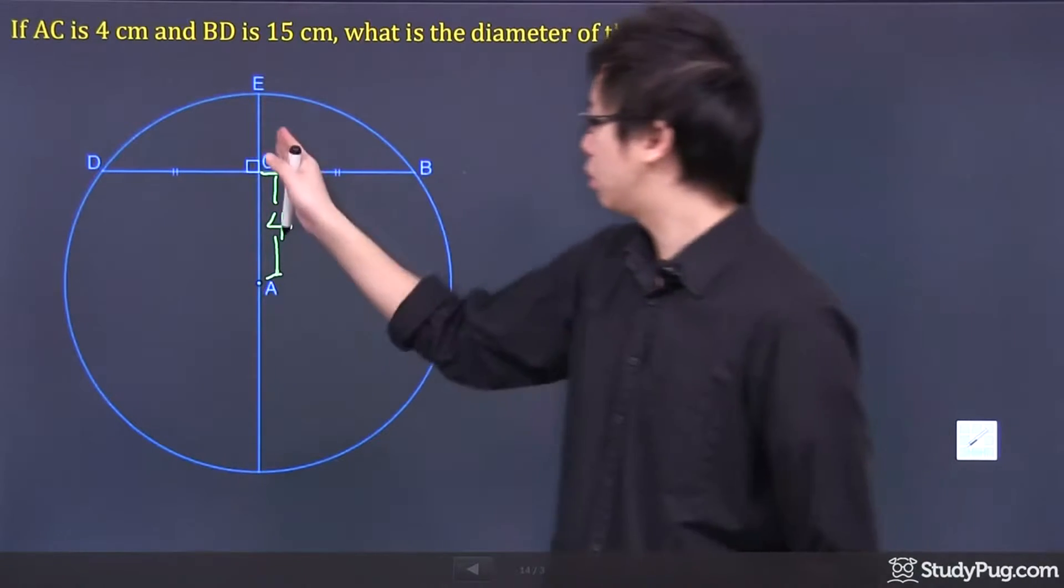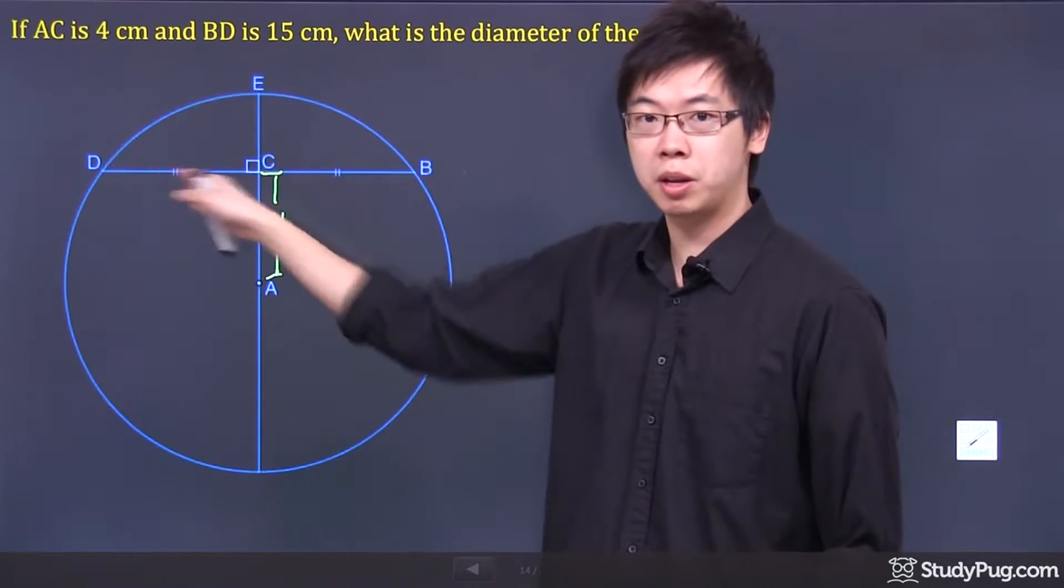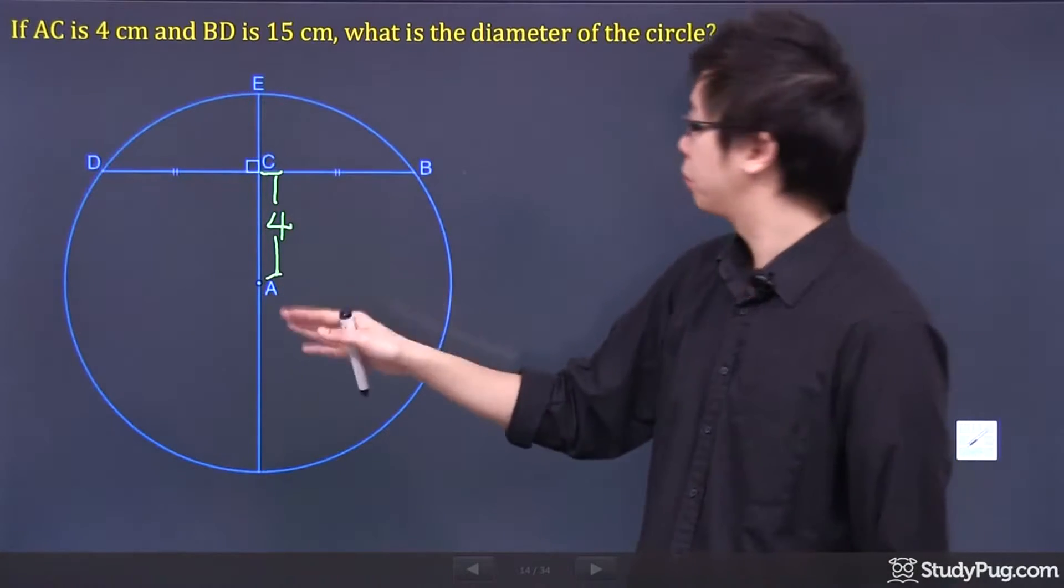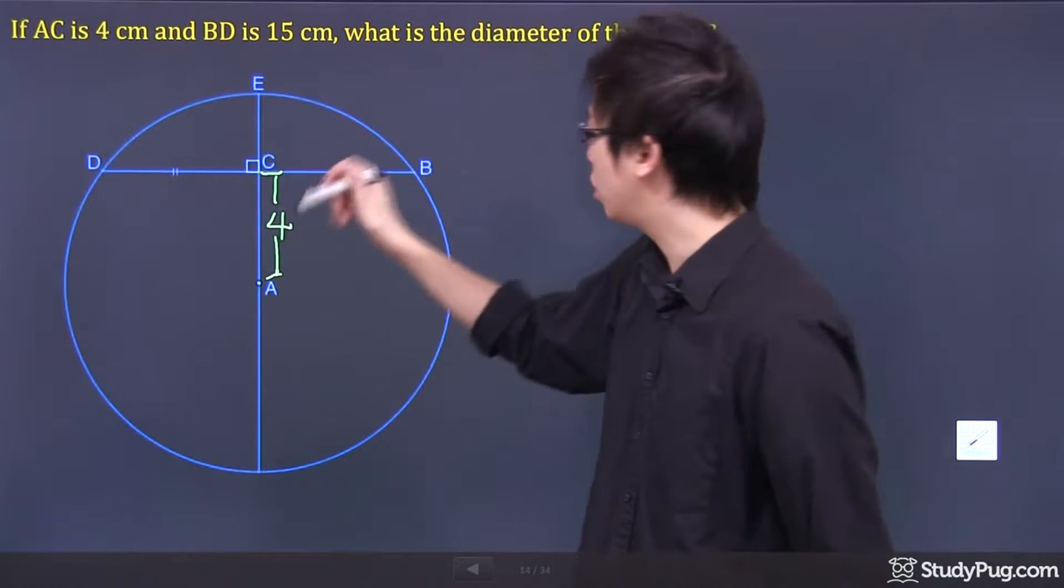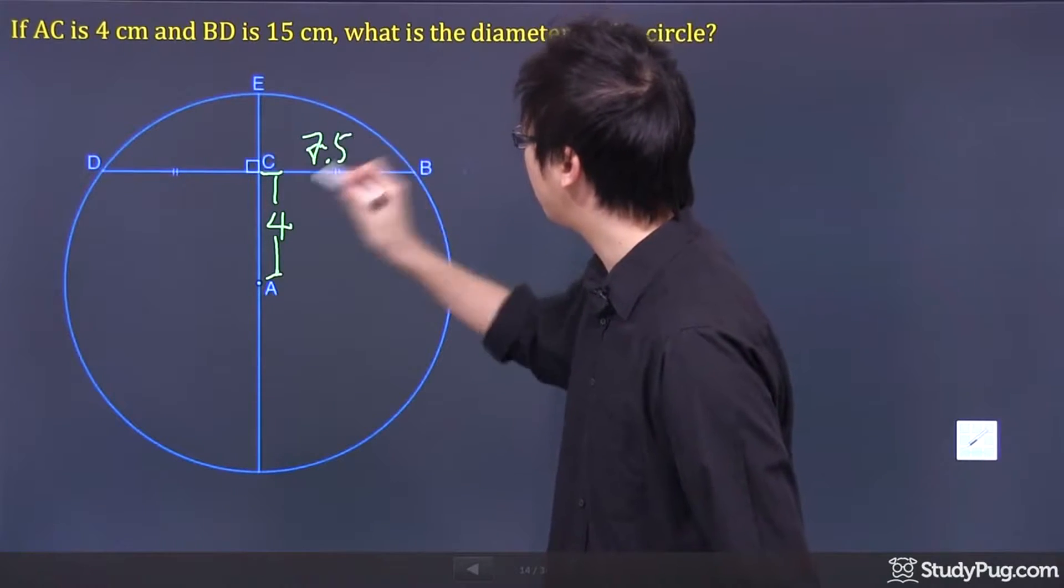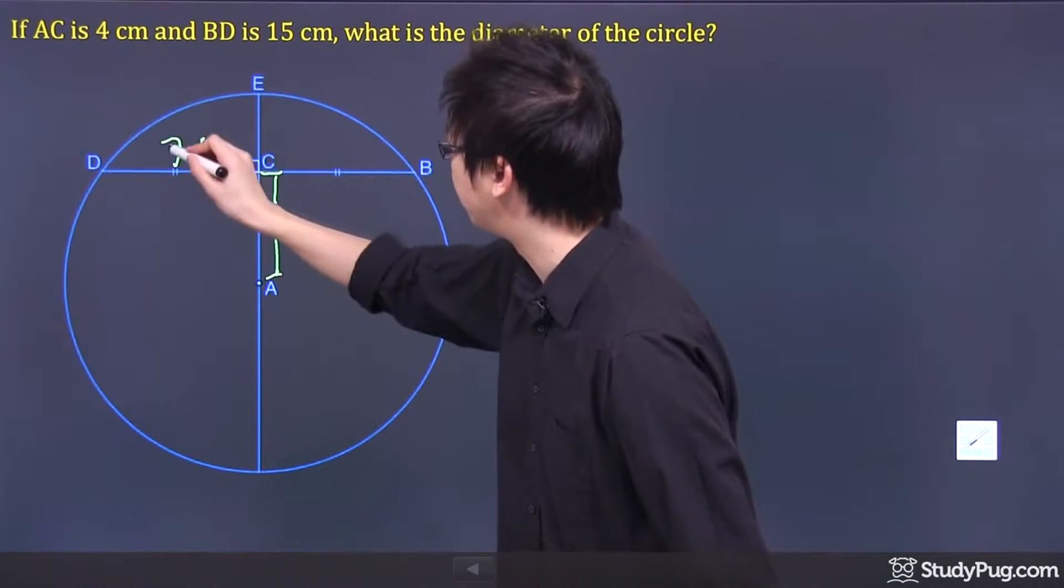But because it's a bisector, these two sides right here, the two segments here and here, they're both equal. So the total is 15. If you divide by 2, you get 7.5 from here and 7.5 here as well.